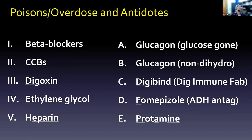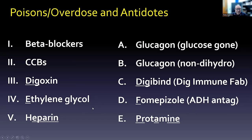Digoxin and digibind — the first three letters are the exact same. Digibind, or digoxin immune Fab, is one most people can remember. Ethylene glycol is a poison if you try to ingest it, and fomepizole, which is an ADH antagonist, is its antidote — so those are an E and F. We're going B, C, D, D, E, F.